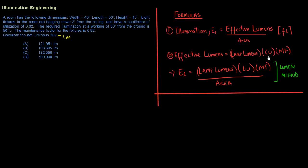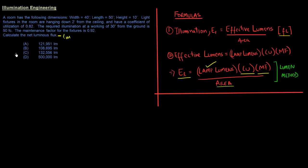The lamp lumens times the coefficient of utilization times the maintenance factor gives the effective lumens. So illumination becomes lamp lumens times coefficient of utilization times maintenance factor, divided by the area. The unit for illumination is foot candles. In our problem we've been given the foot candles, the coefficient of utilization, the maintenance factor, and the area — and we have to find the lamp lumens.